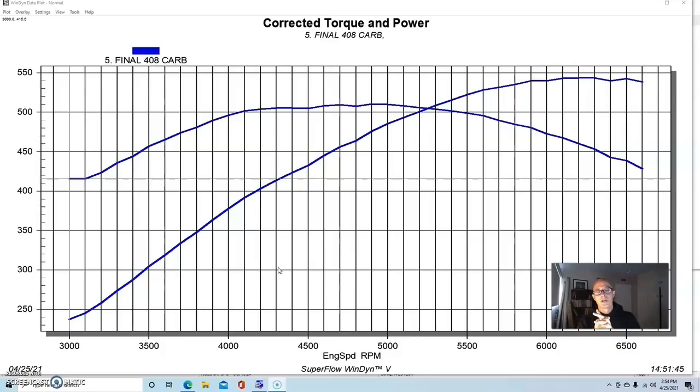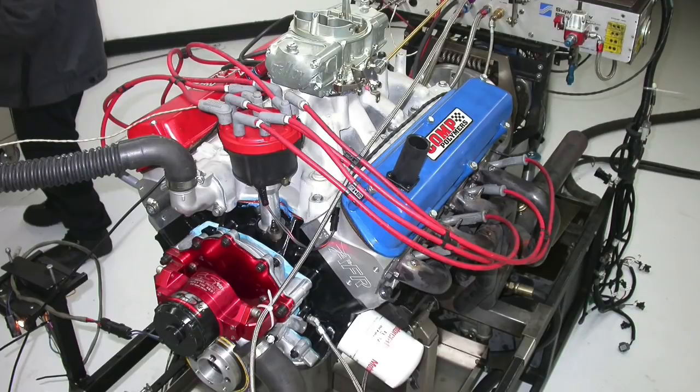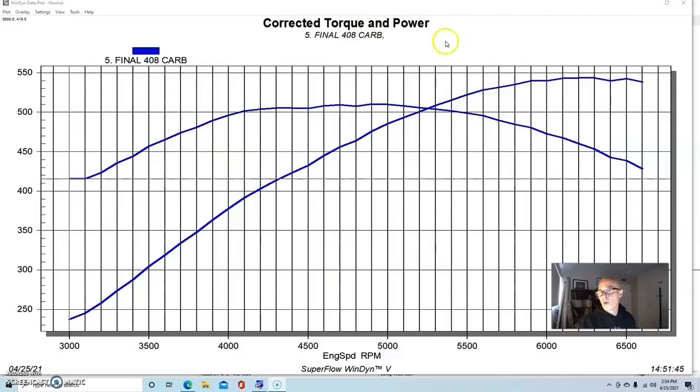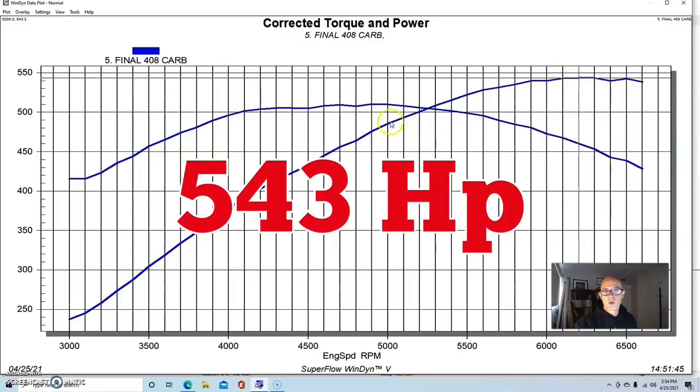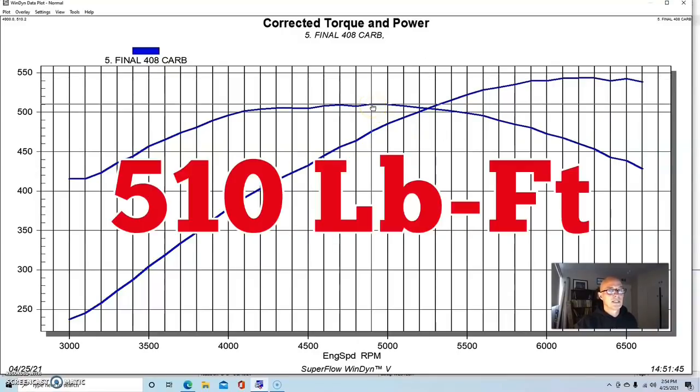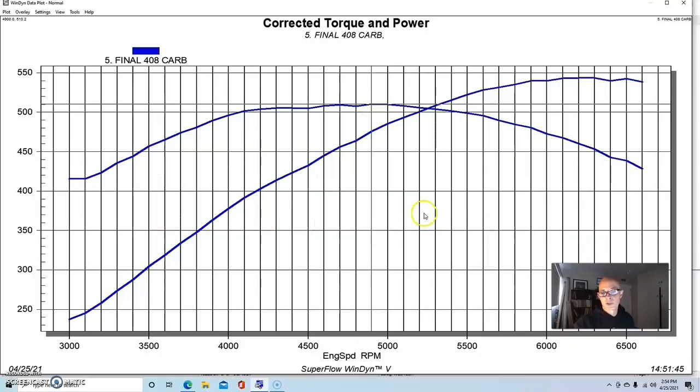For the carbureted combination, we optimized the tune on this thing and run in our carbureted configuration, our 408 stroker produced 543 horsepower and the peak torque checked in at 510 foot pounds of torque. So this is a good little stroker engine, nearly 550 horsepower over 500 foot pounds. So like in a Fox body Mustang, this thing would be awesome.